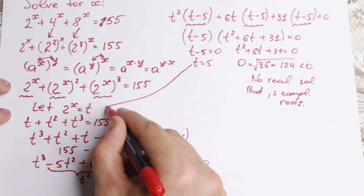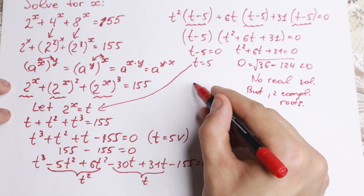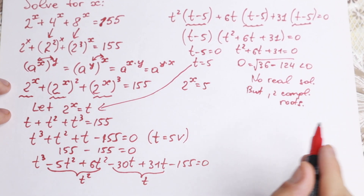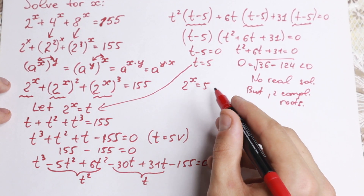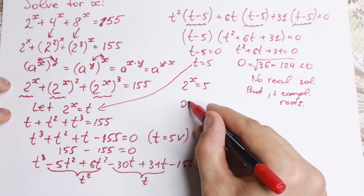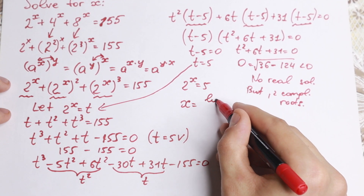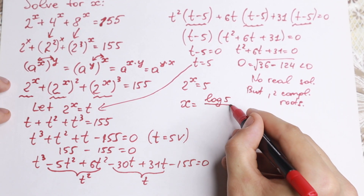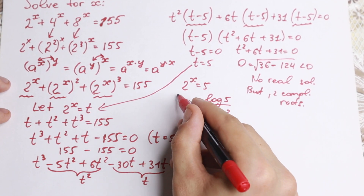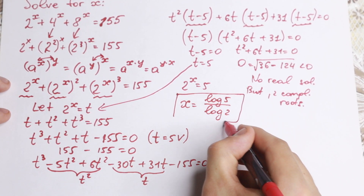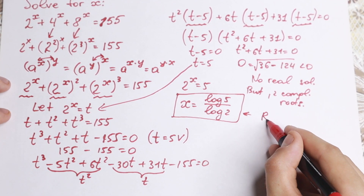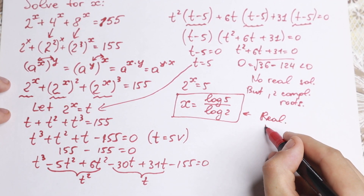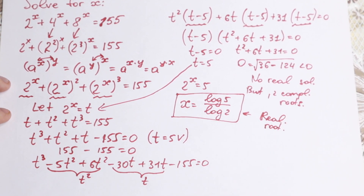Going back to our substitution, t equals 5 means 2 to the x equals 5. Applying the classic logarithm rule, x equals log 5 divided by log 2. This is our one and only real answer — the real root of the original equation.